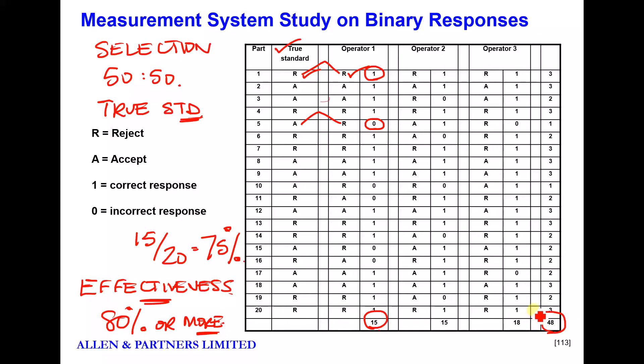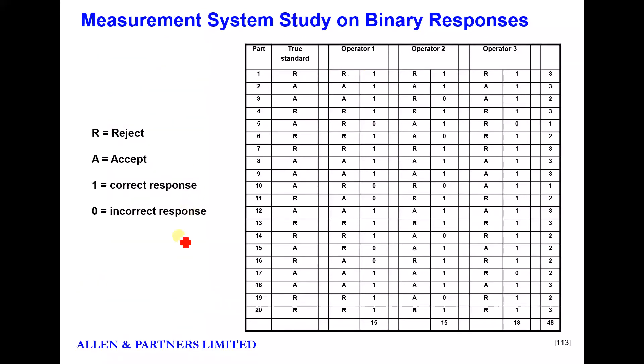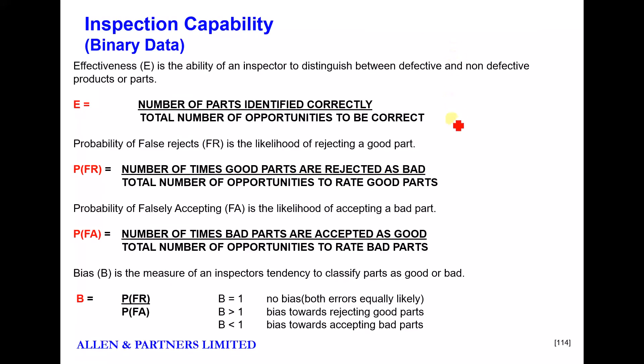We could work out the effectiveness for the whole test. So you can see there, we scored 48 out of the 60 attempts that were made to assess parts. 48 out of 60, this measurement system is 80% effective. So that would be the first measure that we would look at. How effective is the measurement system? Then there are other backup statistics for this.